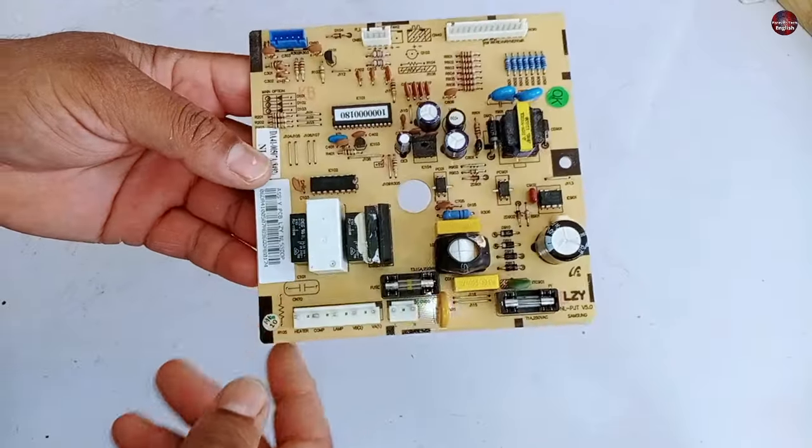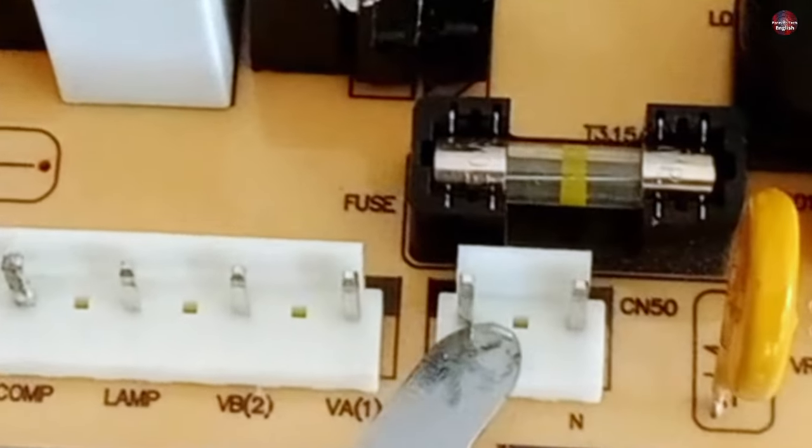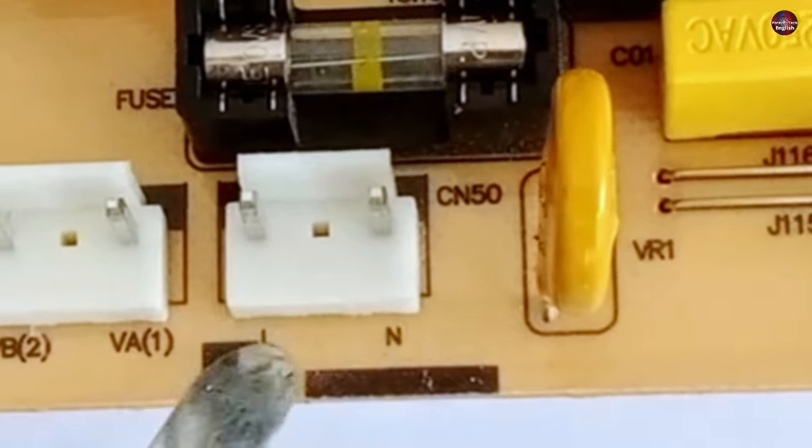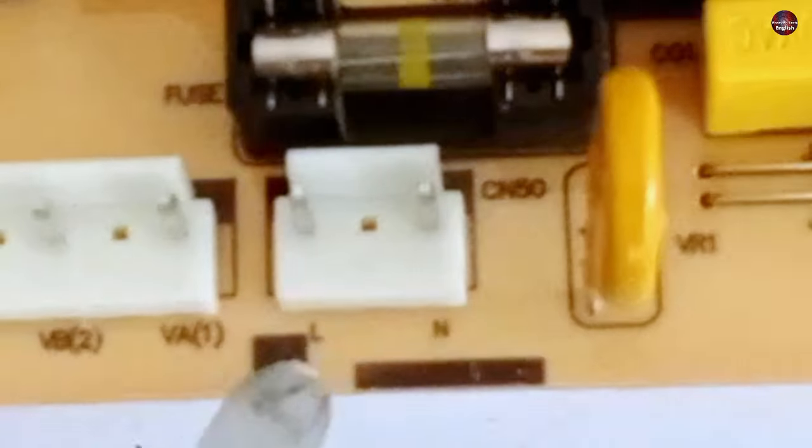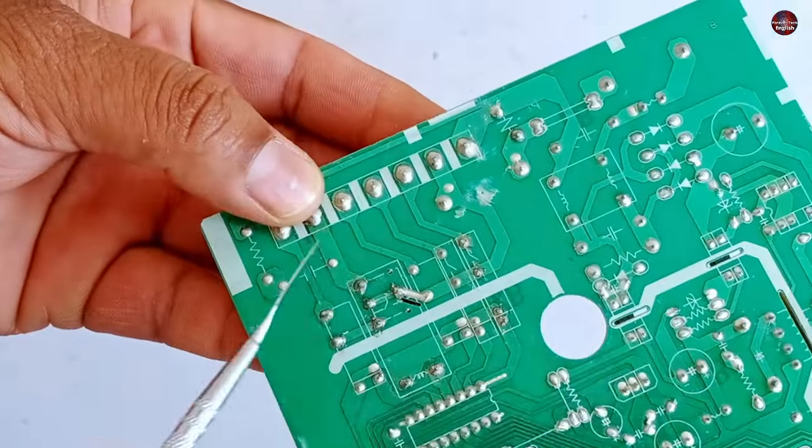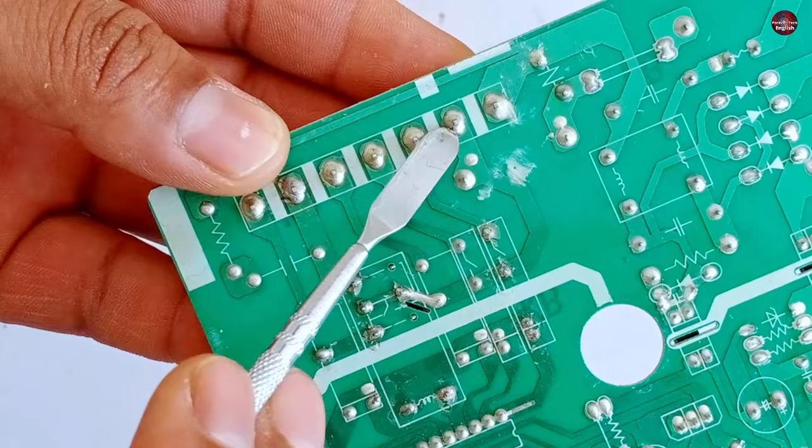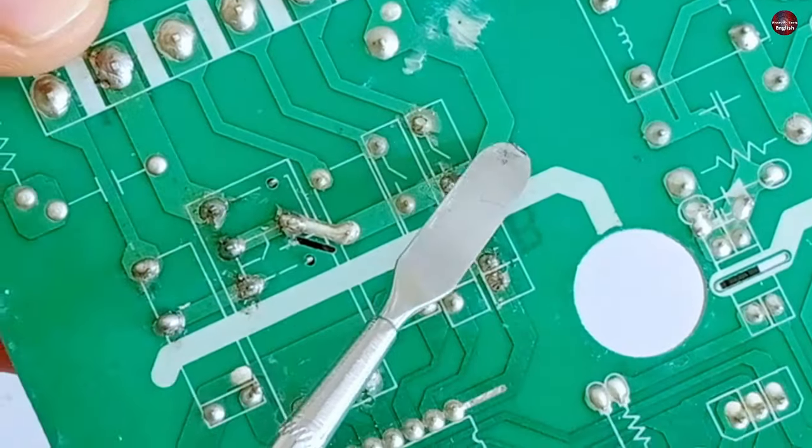I have removed the circuit board from the refrigerator. This connector has line and neutral written on it. 220 AC volts will pass through these pins. If I follow the prints of this connector, this is the line print. The line print is moving further to these relays.